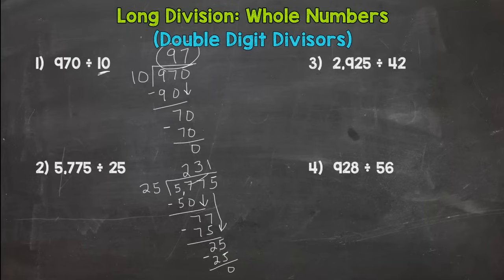And we have nice and compatible numbers here. 25 divided by 25 is 1. 1 times 25 is 25. Subtract, and another problem with no remainder, quotient 231. Now number one and number two we had a 10 and a 25. Those are pretty easy double digit divisors to work with because you can do a lot of mental math. Number three and four, the numbers aren't so nice to work with so they're going to take a little extra work. So let's check out number three here. We have 2,925 divided by 42.